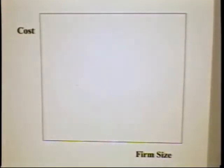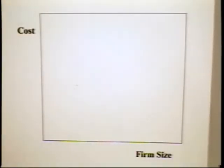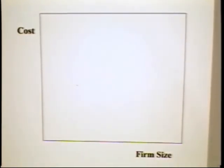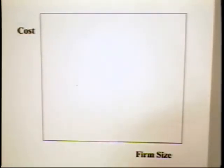Now we can describe these lines of analysis in terms of a graph. This graph has the cost of activities on the vertical axis and the size of the firm on the horizontal axis.